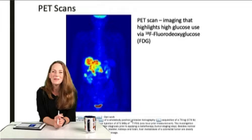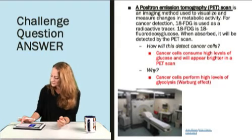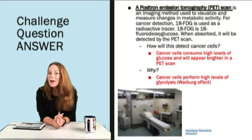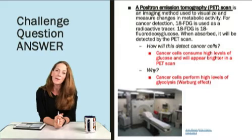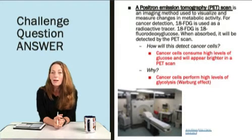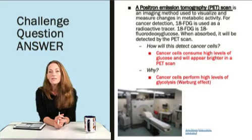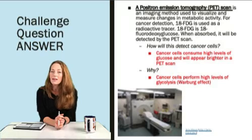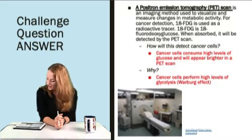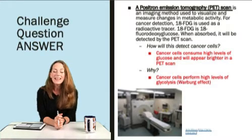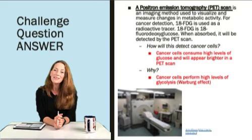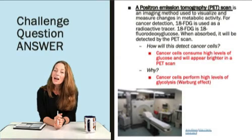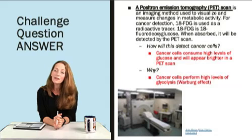Why is this imaging possible with a PET scan? It goes back to what we talked about with one of the hallmarks of cancer: a change in metabolism. Cancer cells often consume high levels of glucose because of the Warburg effect, and because of that they will appear brighter in a PET scan. There are some areas of the body that have high glucose use, and those are expected by the radiologist. Other areas that light up when they're not normally supposed to are suspect for a tumor utilizing high levels of glucose.